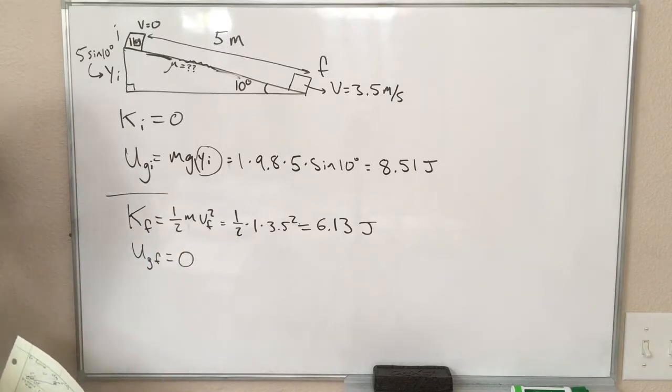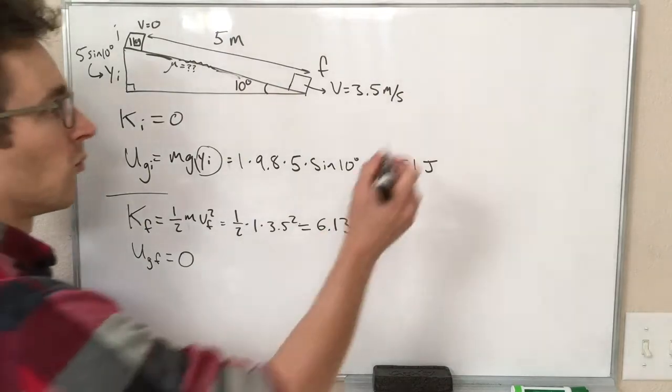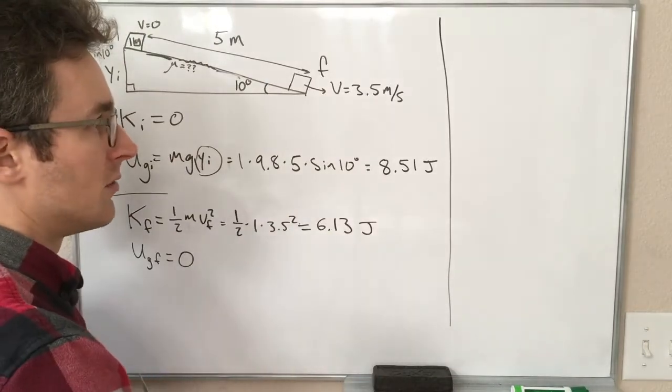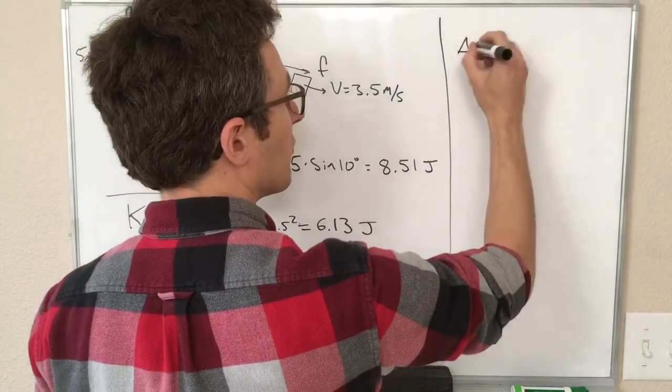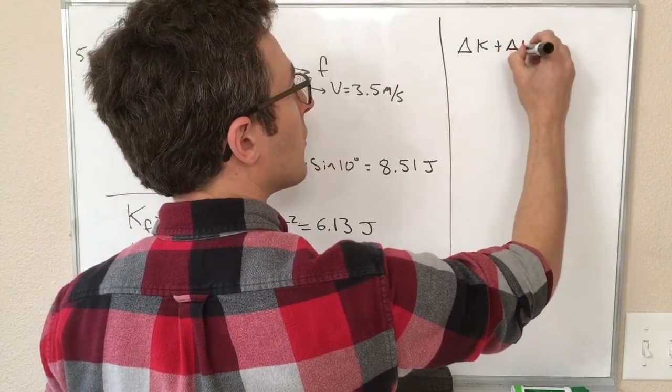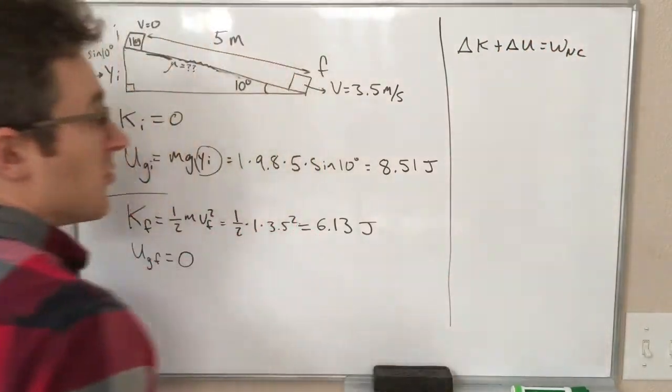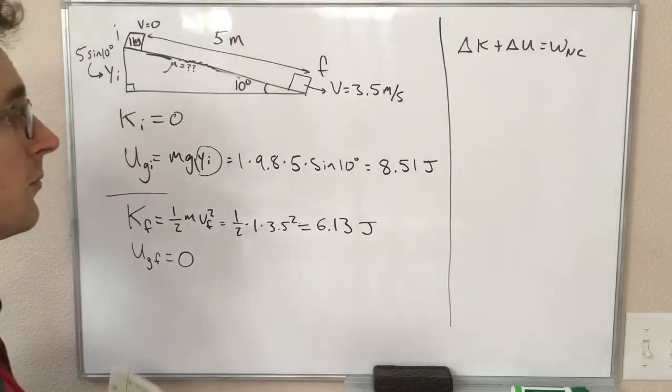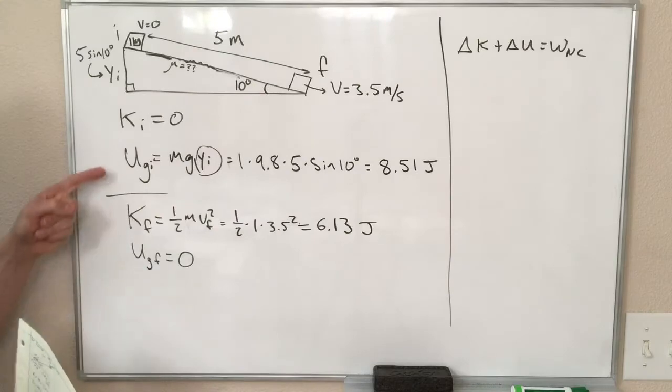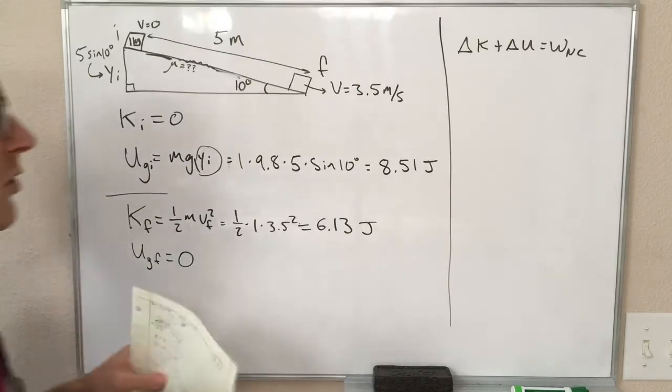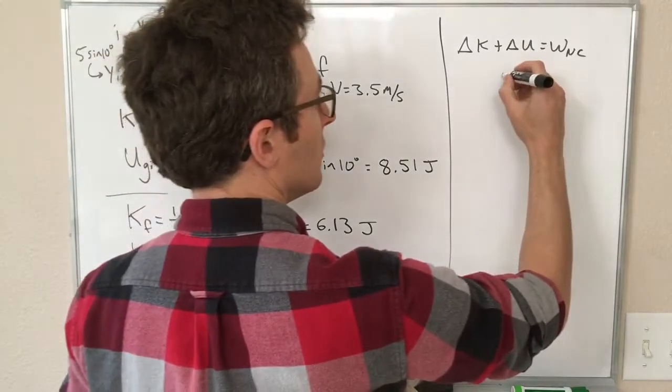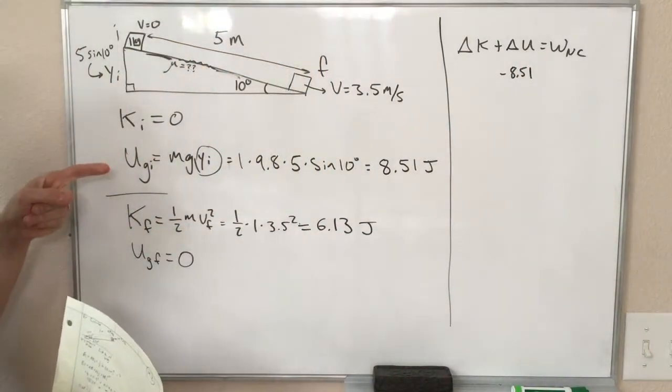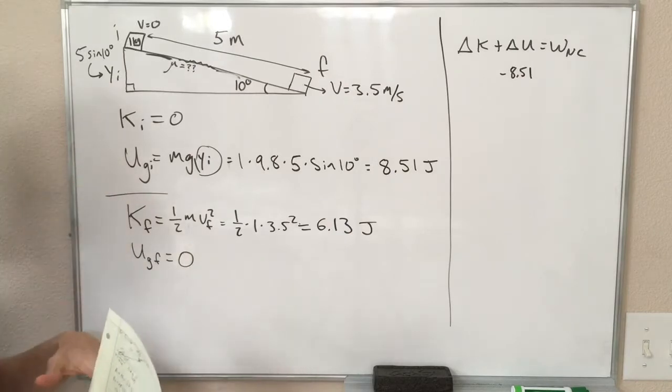So we can now put these into our energy conservation equation. So we have a couple different versions of this, we'll look at both of them. So the first one looks like this, delta K plus delta U equals the non-conservative work. So delta U is U final minus U initial, so that's 0 minus 8.51, so delta U is minus 8.51. That is, our potential energy starts at 8.51, ends up at 0, so it's this negative change.